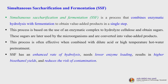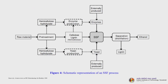Simultaneous saccharification and fermentation (SSF) is a process that combines enzymatic hydrolysis with fermentation to obtain value-added products in a single step — a very important distinction. This process uses an enzymatic complex to hydrolyze cellulose and obtain sugars, which microorganisms then convert into value-added products. SSF is often effective when combined with dilute acid or hot water pretreatment. It features an enhanced rate of hydrolysis, requires lower enzyme loading, results in higher bioethanol yields, and reduces the risk of contamination.